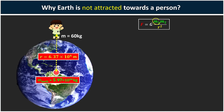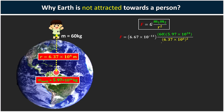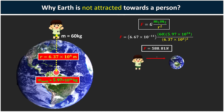We can use the same formula to calculate the gravitational force by substituting M1 as 60 kg for the boy and M2 as the mass of the Earth, with the distance being the radius of the Earth. Press the calculator yourself and you will get 588.81 Newtons. So the boy experiences 588.81 Newtons of gravitational force, and at the same time the Earth also experiences the same amount of force.